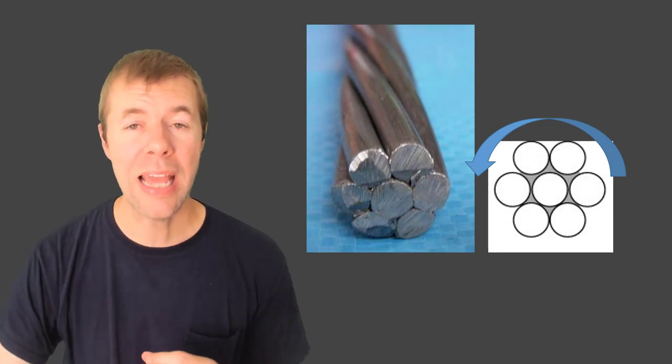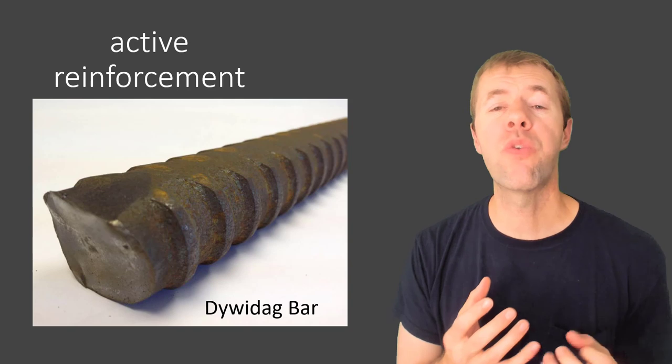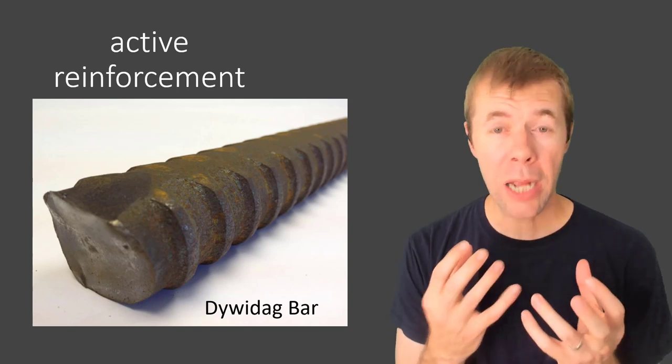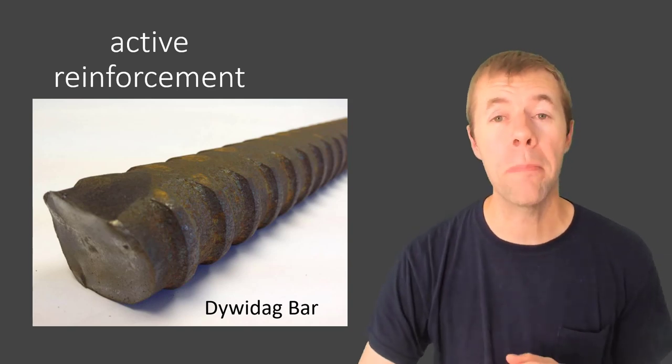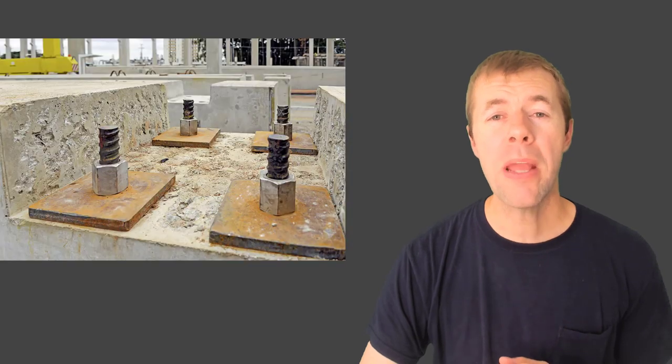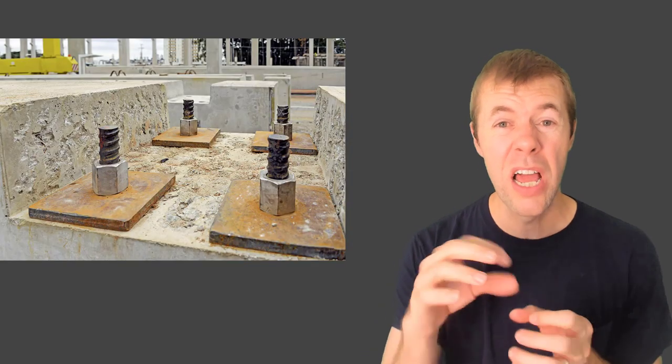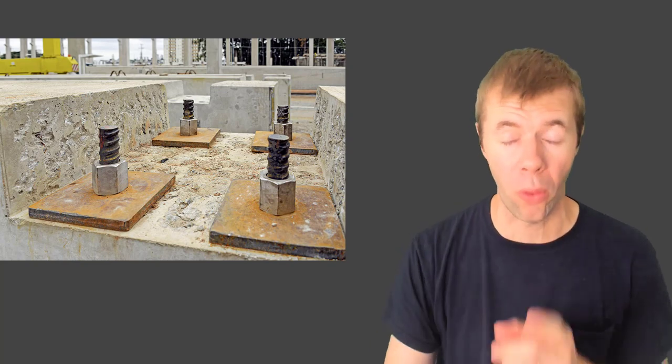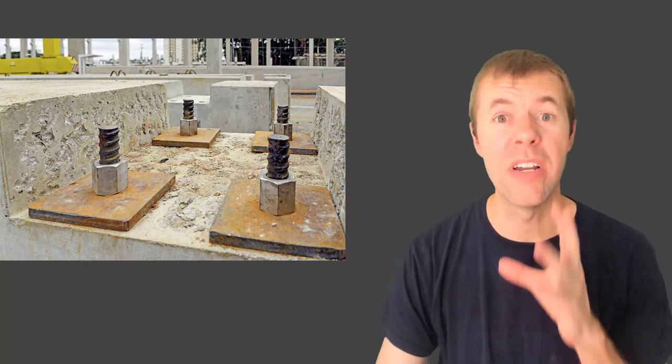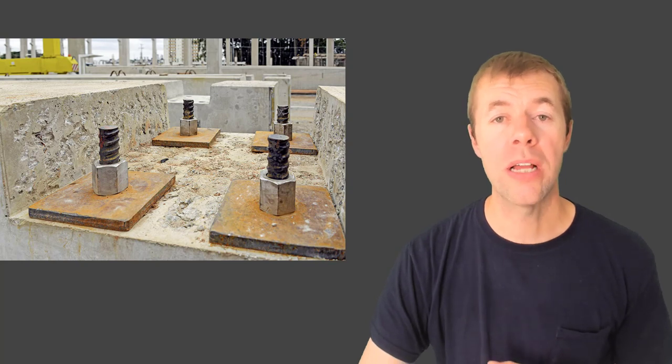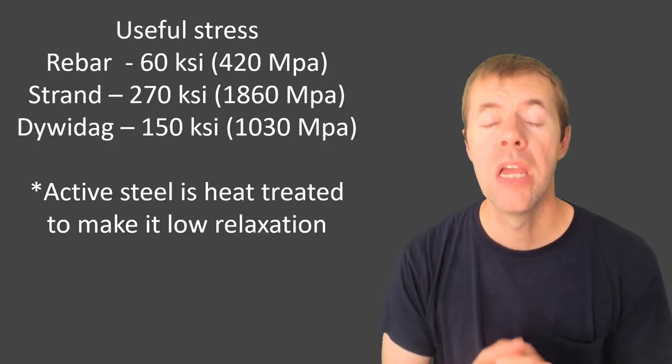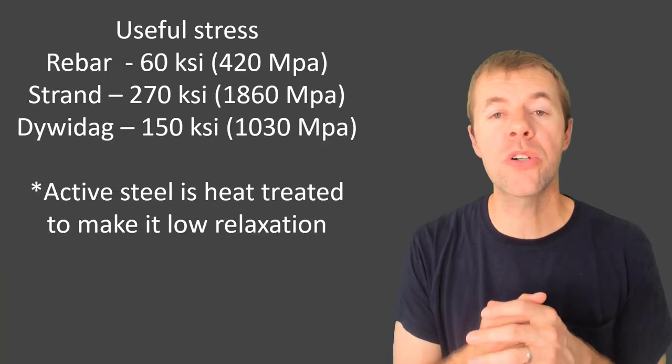There's another type of active reinforcement called Dywidag bars, named after the Dywidag company and their inventor. And they're mainly used in post-tension applications with very specialized nuts. They twist on and pull. Again, they're active reinforcement because they have an internal stress that's transferred to the concrete.